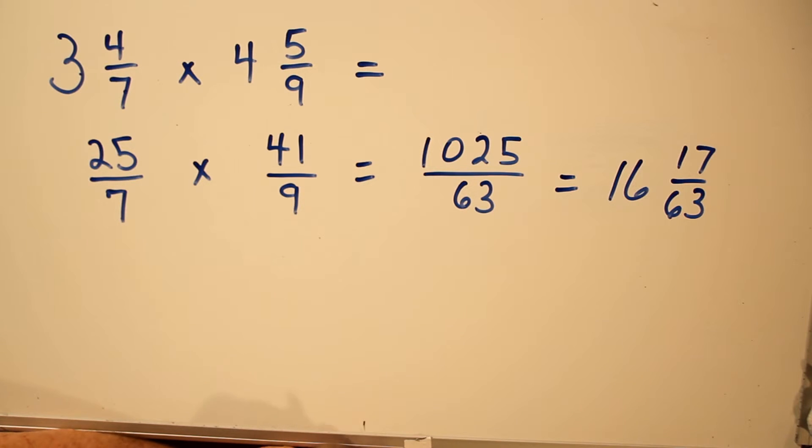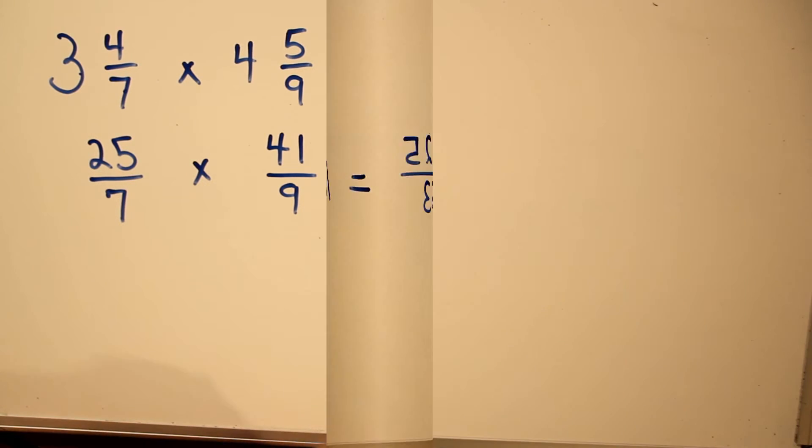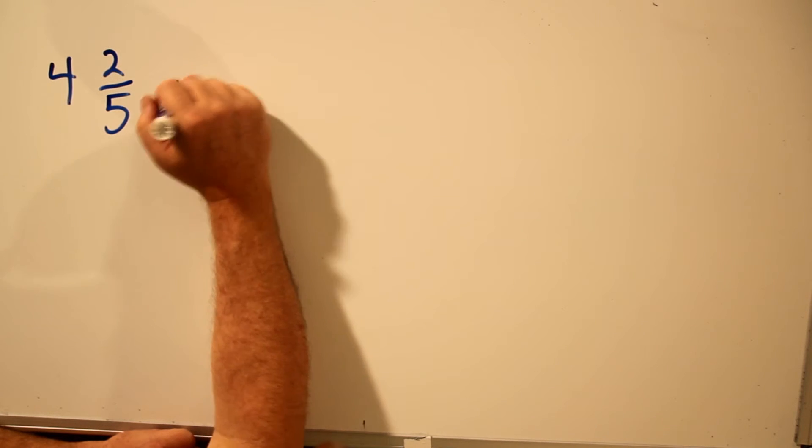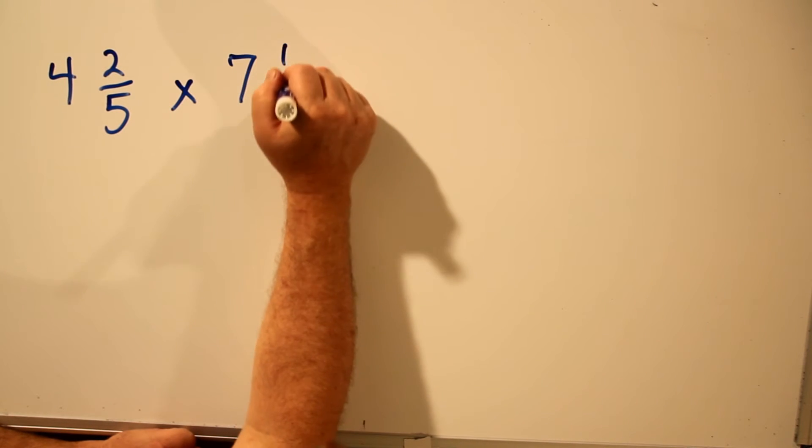And that's how you multiply two mixed numbers together. 4 and 2/5 times 7 and 1 over 8.